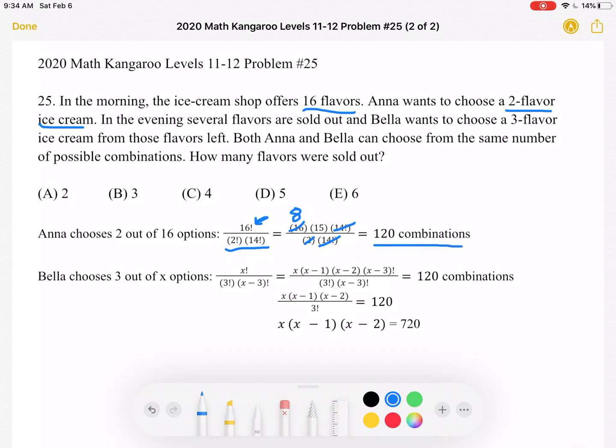16 is divisible by 2, so we can rewrite this as 8 times 15, which is a total of 120 combinations. And we wanted to find this number because the problem tells us that both Anna and Bella can choose from the same number of possible combinations. So if Anna can choose from 120 combinations, then Bella must also be able to choose from 120 combinations.